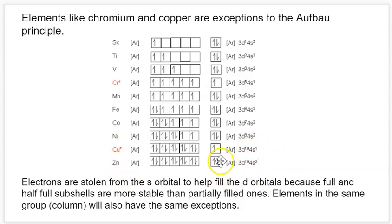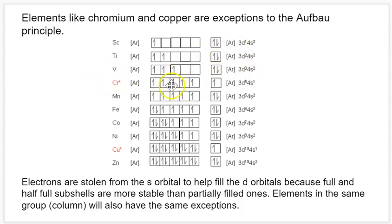These exceptions for chromium and copper apply to elements in the same groups: molybdenum and tungsten do the same thing as chromium, moving one electron from s to d; silver and gold do the same as copper, moving one s electron to get a full d subshell. This only applies to s and d subshells because they're close enough in energy. You're never going to see this exception for p subshells. And again, this isn't tested on the AP exam, but it's useful knowledge to understand the mechanics.